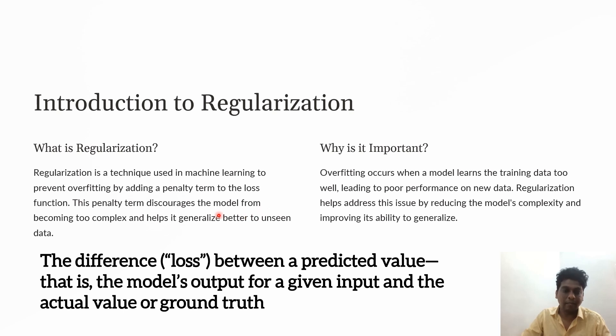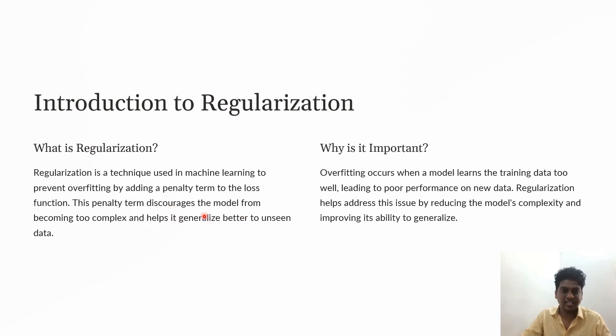The model can become too complex. This penalty term discourages the model from becoming too complex and helps with generalization for better performance on unseen data.